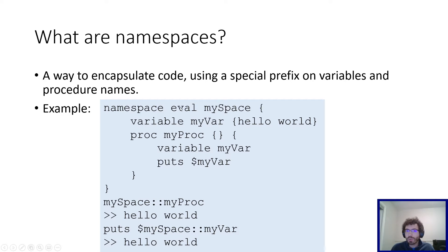So as you can see in this example, I have a namespace called mySpace, and in it I have a variable called myVar. Now that myVar can be accessed with the mySpace prefix. Additionally, I have a procedure called myProc, which accesses myVar without the prefix since it's within the namespace, but then that has to be accessed with the prefix outside of the namespace.